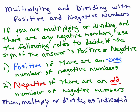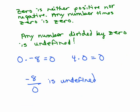Now keep in mind, it will be different if there's a zero involved. I'm saying if we're only working with positive and negative numbers. Zero is neither positive nor negative, so any number times zero is still going to be zero. Also remember that any number divided by zero is undefined. So zero times a negative number is simply zero, or zero times a positive number is zero.